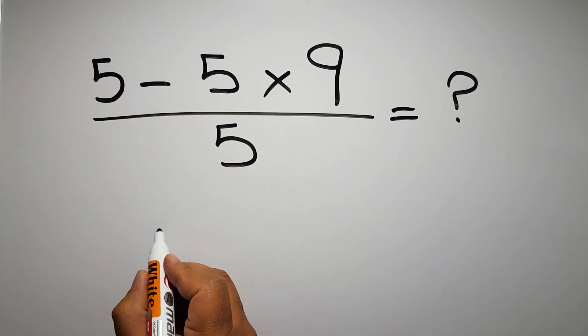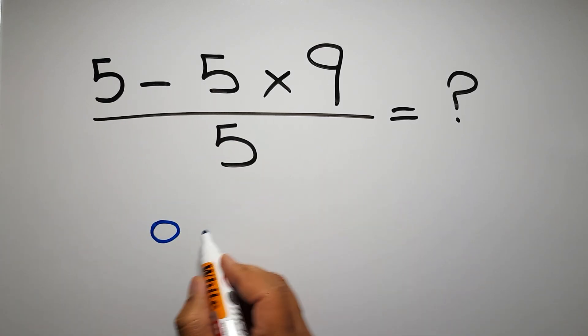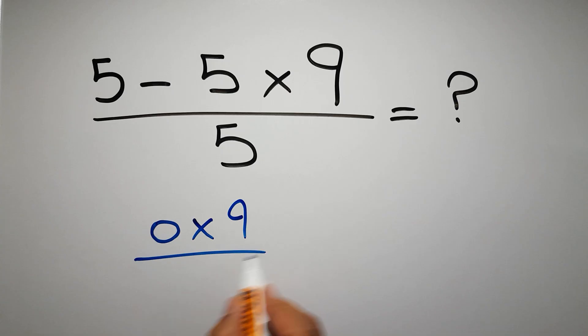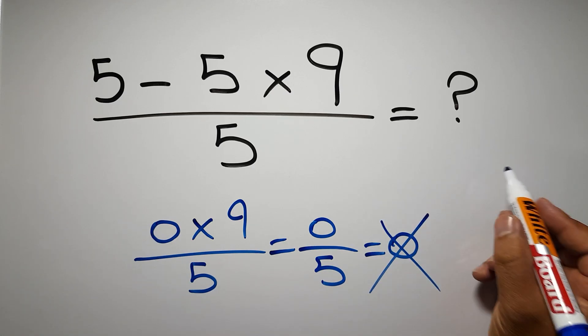5 minus 5 gives us 0, and 0 times 9 over 5... 0 times 9 is just 0, and 0 over 5 gives us 0. But this answer is not correct because according to the order of operations, first we have to do parentheses, then exponents, then multiplication or division, and finally addition or subtraction.